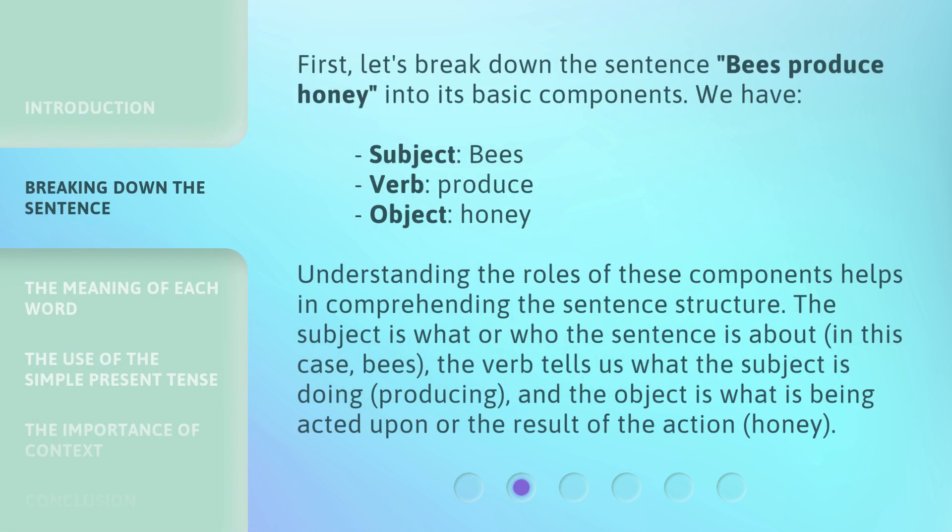First, let's break down the sentence 'bees produce honey' into its basic components. We have: subject — bees, verb — produce, object — honey. Understanding the roles of these components helps in comprehending the sentence structure.